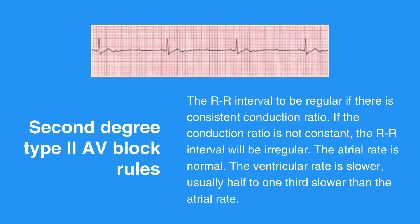P waves are upright and uniform. There is not a QRS following every P wave. The PR interval can only be measured on conducted beats and is usually constant across the strip. It may or may not be longer than a normal PR interval, which is 0.12 seconds.